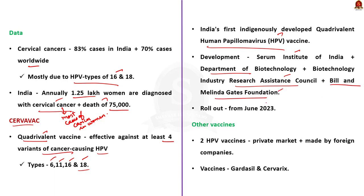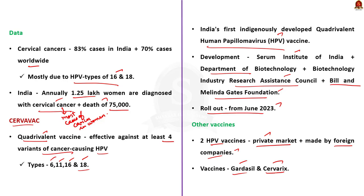According to government sources, Cervavac is going to be rolled out in the coming June. Apart from Cervavac, India has two other HPV vaccines — Gardasil and Cervarix — which are available in the private market and are made by foreign companies. Now, let us move on to the next question.